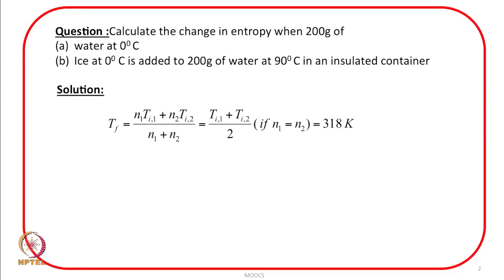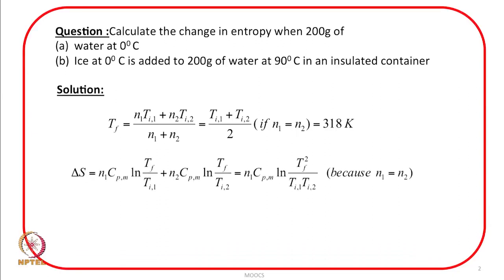Since we know the final temperature we can calculate the entropy change using the established equation: delta S = N1·CpM·ln(Tf/Ti1) + N2·CpM·ln(Tf/Ti2). Since N1 equals N2, combining the logarithmic terms using ln A + ln B = ln(A·B), the final form is N1·CpM·ln(Tf² / (Ti1·Ti2)).